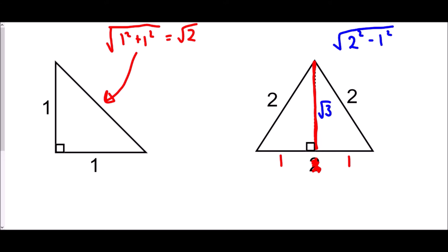Now let's think about the angles. The first triangle is isosceles with two equal sides, so the two base angles must be equal. With 90 degrees already used, the remaining 90 degrees splits equally, giving 45 degrees each. In the equilateral triangle all angles are 60 degrees, but the line of symmetry splits the top angle into two equal pieces of 30 degrees each. This gives us angles in a right-angle triangle with corresponding side lengths, which we can use to find exact trig values.